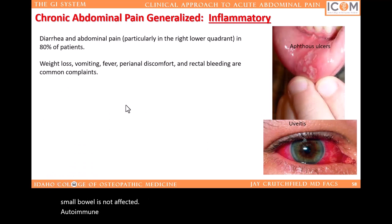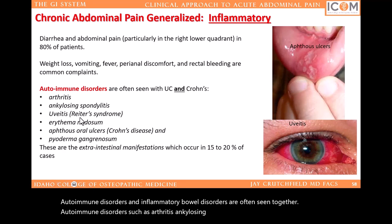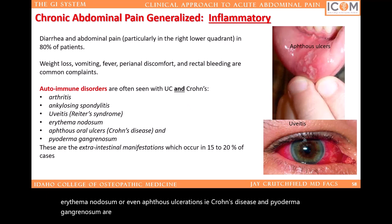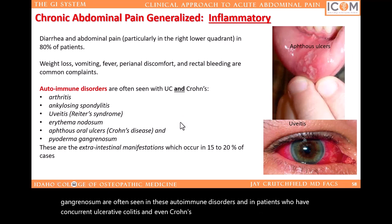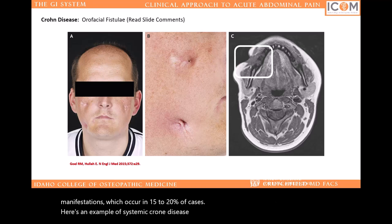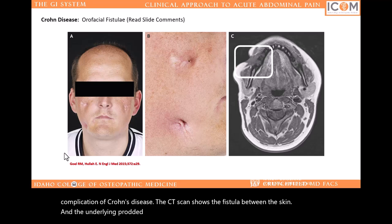Autoimmune disorders and inflammatory bowel disorders are often seen together — autoimmune disorders such as arthritis, ankylosing spondylitis, uveitis, Reiter's syndrome, erythema nodosum, aphthous ulcerations, and pyoderma gangrenosum are often seen in patients who have concurrent ulcerative colitis and even Crohn's disease. There are several extra-intestinal manifestations which occur in 15-20% of cases. Here's an example of systemic Crohn's disease — this patient is experiencing a long-standing complication. The CT scan shows a fistula between the skin and the underlying parotid gland. It's truly a horrible disease.